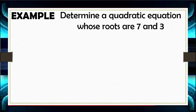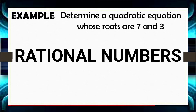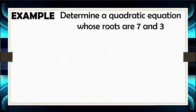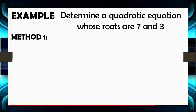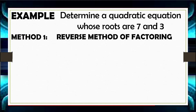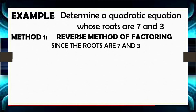Determine a quadratic equation whose roots are 7 and 3. For finding the quadratic equation given roots which are rational numbers, there are different methods we need to remember. Our first method is the reverse method of factoring. Since our roots are 7 and 3, it follows that X equals 7 and X equals 3.